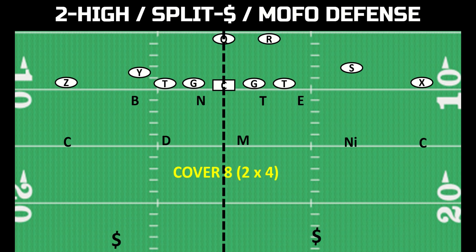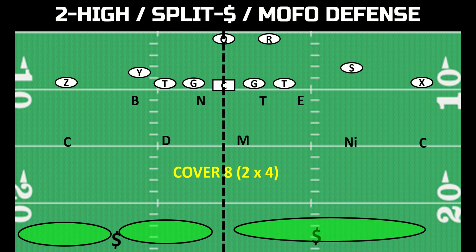Then you have cover eight, which is the opposite of cover six — it's cover six flipped. Why is it called cover eight? Because two times four equals eight. Cover eight is quarters to the passing weakness and then cover two — half — to the passing strength. Cover six and cover eight are the same exact thing, just flipped.